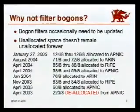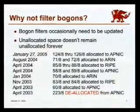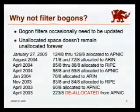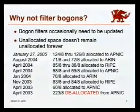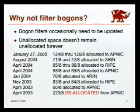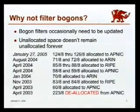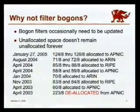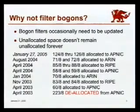Looking at the past two years, roughly a few address blocks per quarter are allocated out. In fact, just last Thursday IANA assigned 124 through 126 to APNIC. So if you're sitting here bored to death by my presentation, you might want to take the opportunity to make sure your filters are up to date.